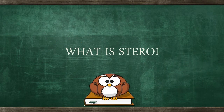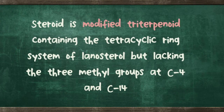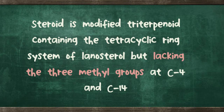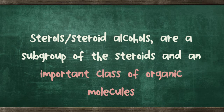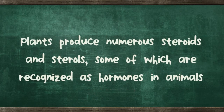What is a sterol? A sterol is modified through terpenoids containing the tetracyclic system of lanosterol but lacking the three methyl groups at C4 and C14. Sterols, or steroid alcohols, are a subgroup of steroids and an important class of organic molecules. Plants produce numerous steroids and sterols, some of which are recognized as hormones in animals.